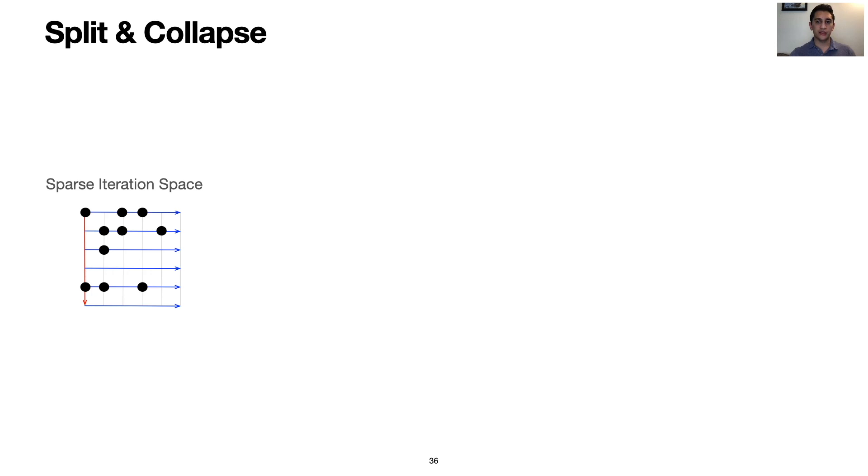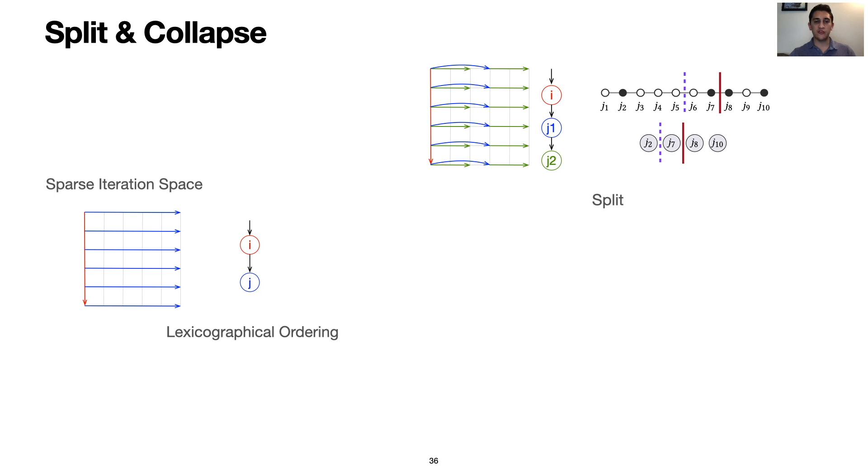In addition, we avoid directly transforming complex co-iteration loops, and instead transform sparse iteration spaces in terms of the lexicographical ordering that points should be iterated in. In this case, we depict a row-first iteration of the space, where i refers to the row index, and j refers to the column index. Focusing on the lexicographical ordering allows us to largely ignore sparsity, and instead handle generating the sparse iteration loops after all of the transformations have been applied. Our split transformation is used to split one level of the lexicographical order into two, where the size of each level can either be based on a fixed number of non-zeroes or coordinates.